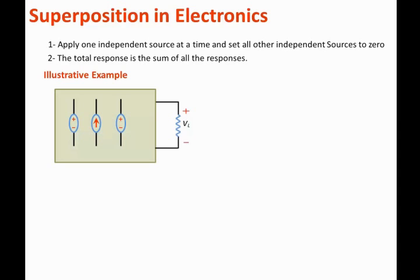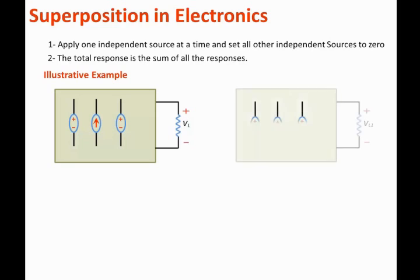Using superposition on this circuit, the first step is to apply the first voltage source and set the other two sources to zero. The voltage source becomes a short circuit and the current source becomes an open circuit. We then solve for the voltage across the load caused by the first voltage source and call it VL1.